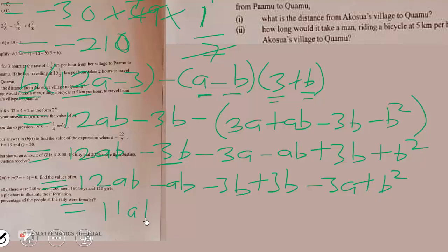So 12ab minus ab is 11ab. Then minus 3b plus b gives minus 3b minus b, which is zero. We are left with minus 3a plus b squared. The final answer is 11ab minus 3a plus b squared.